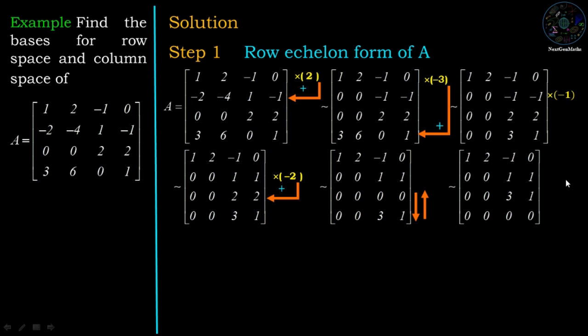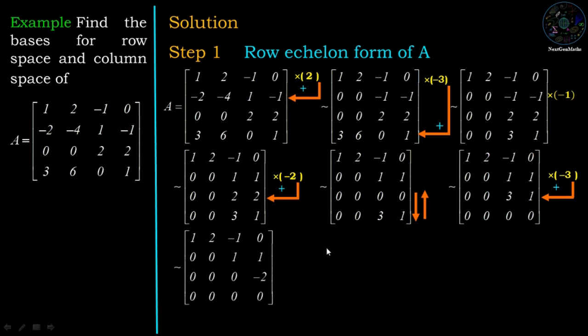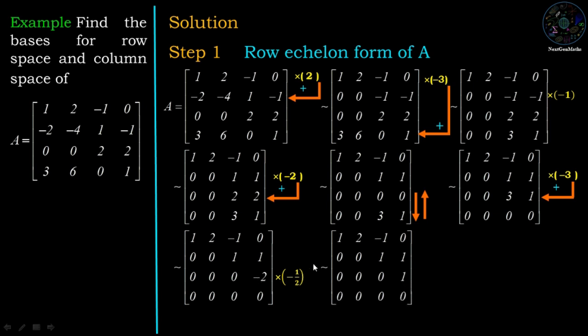Now multiply the second row by minus 3 and add it to the corresponding entries of the third row. In the third row, this minus 2 should become 1, so we multiply the third row by minus 1/2. Then we have the row echelon form of matrix A.